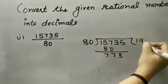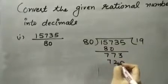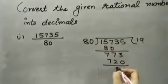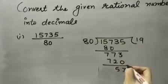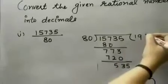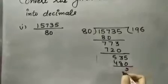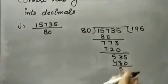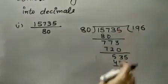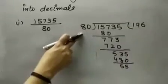3. 8 nines are 72. 3, 5. The next digit will come 535. 80, 6 are 480. 5, 5. Now, there is no digit in the number and 55 is not divisible by 80.